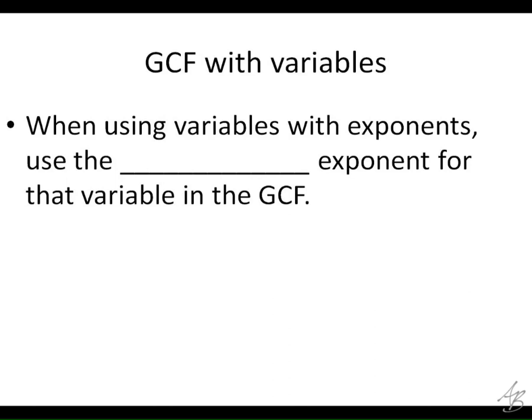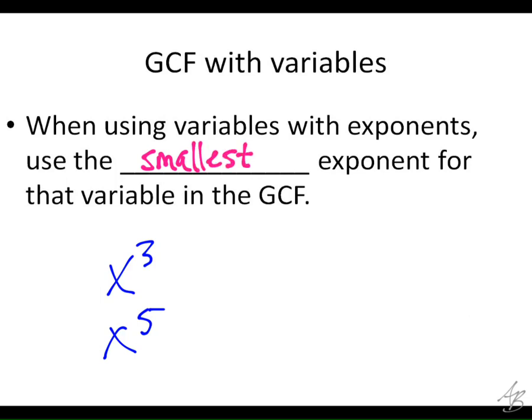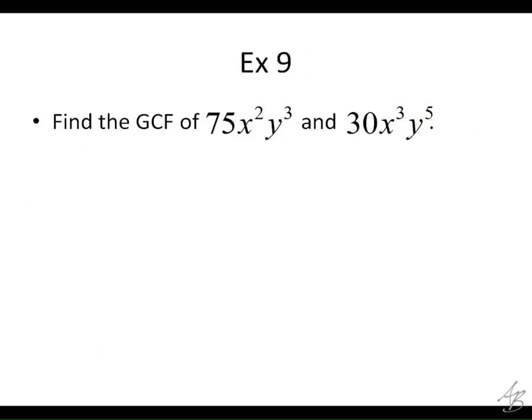Now I'll give you this rule first, and then we'll look at why it works. When we're using variables with exponents, we're going to use the exponents. So let's say we have something with an x to the third power in one of them, and something else with an x to the fifth power in the other. How many x's would those have in common? Three — because if there are three of them here and five of them here, we can match three up together. So which exponent do we use — the larger or the smaller? We're going to use the smallest exponent. When we have more than one of the same variable, we use the smallest exponent, even if we're comparing three terms.